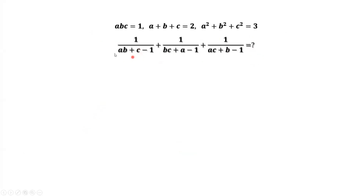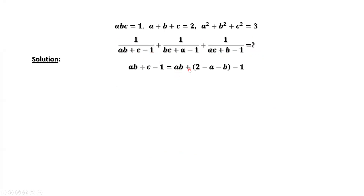Look at the first term — the denominator. AB plus C minus 1 equals AB plus 2 minus A minus B, then minus 1. Originally it is C, and we use the given condition C equals 2 minus A minus B.